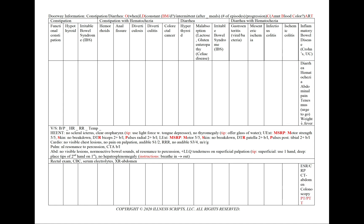Finally, in inflammatory bowel disease — which includes Crohn's and ulcerative colitis — we'll see diarrhea with hematochezia, abdominal pain, tenesmus or the urge to go, and systemic symptoms including weight loss and fever. We'll include inflammatory markers ESR and CRP, a CT of the abdomen, colonoscopy, and PT and PTT.